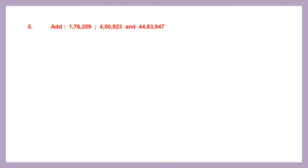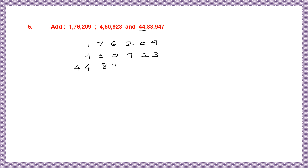Question 5: add. We have three numbers and we simply have to add them, but we have to remember to arrange them properly. The first number is 1,76,209. Then we have 4,50,923. Then we have 44,83,947. Let's arrange them properly.